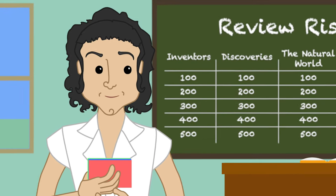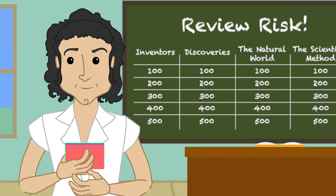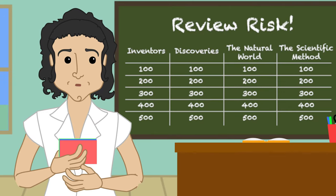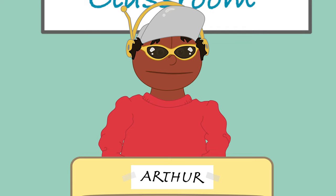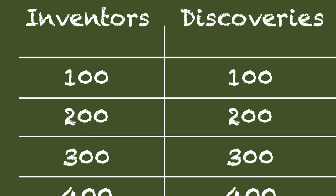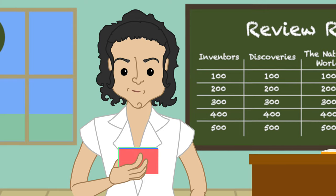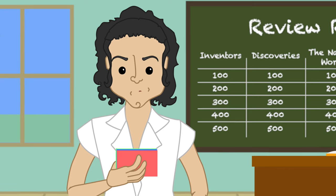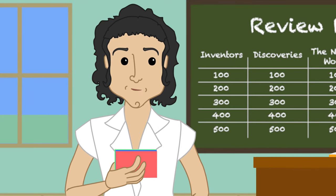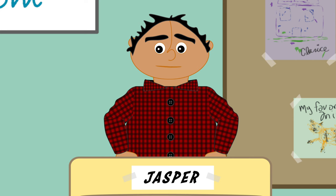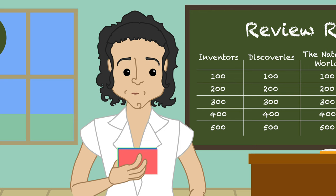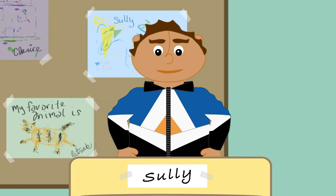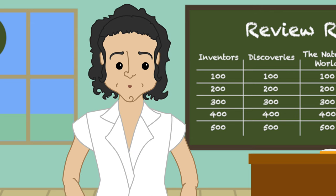And just for fun, I'll have my contestants answer in the form of a question. Pick a category, Arthur. I'll take Inventors for 300 points. This resident of Menlo Park is credited with the invention of the light bulb. Who is Alexander Graham Bell? Sorry, Jasper, that is incorrect. Who is Thomas Edison? Correct! Way to go, Sully! That's 300 more points for your team.